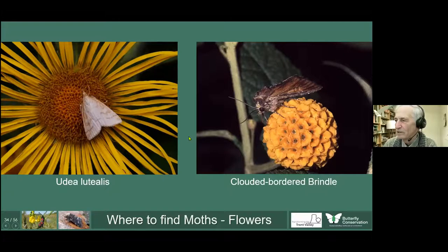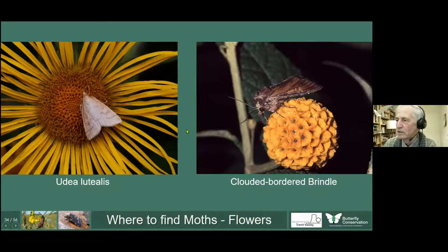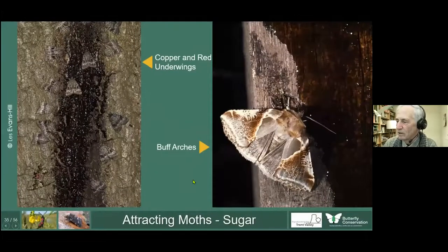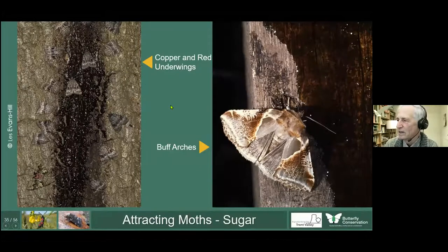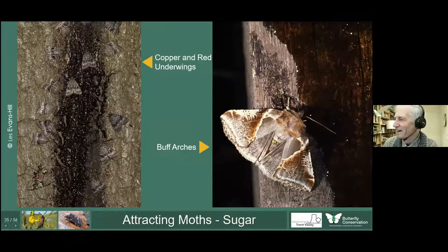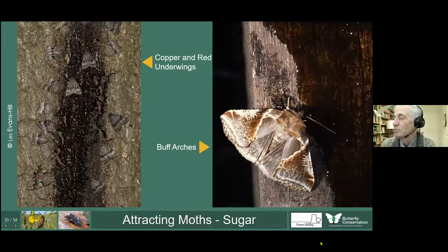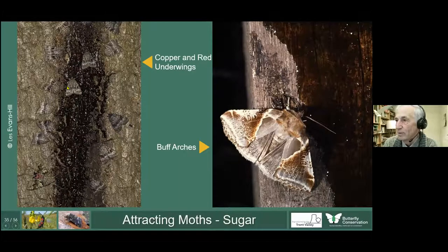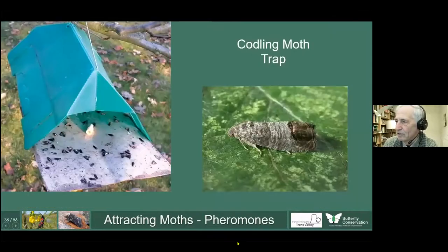To attract moths we have various techniques. One is to use what we call a sugar or sugar mixture — everybody has their own recipe, but it's typically a mixture of syrup and molasses with a little bit of alcohol to subdue the moth. You boil it up in a saucepan, spread it on a tree trunk or fence post, and some species will sit there for hours lapping it up. Here you can see all these Copper Underwings on this sugaring patch, with one Red Underwing and a Buff Arches.